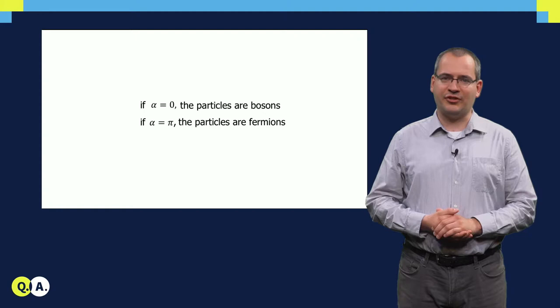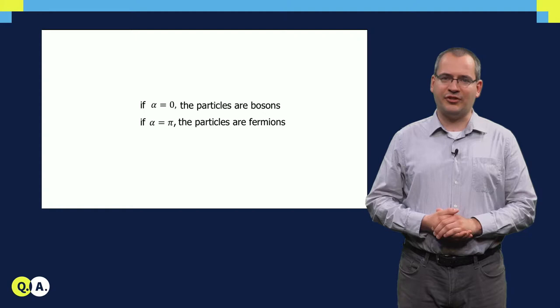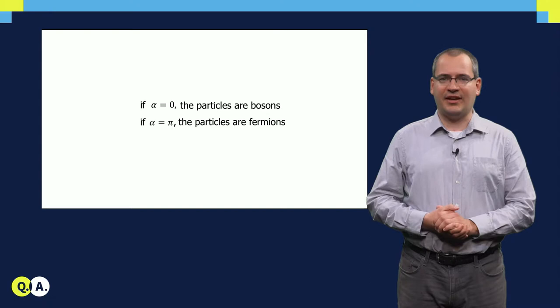Alternatively, alpha equals pi, and after two exchanges we rotated the wave function with 2π, which is a full circle. In this case, we have fermions, such as electrons, protons, or neutrinos.